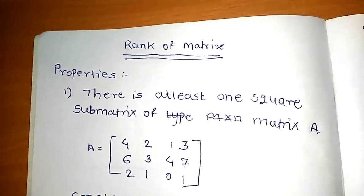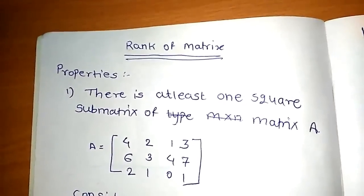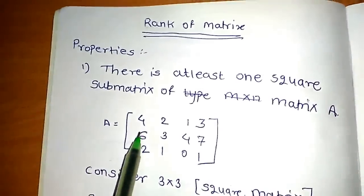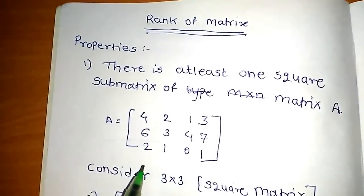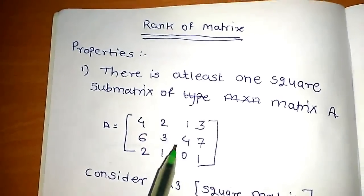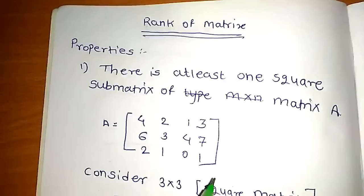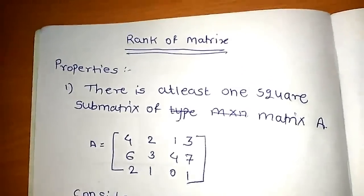We have a 3x4 matrix. The matrix is: 4, 6, 2, 2, 3, 1, 1, 4, 0, 3, 7, 1.